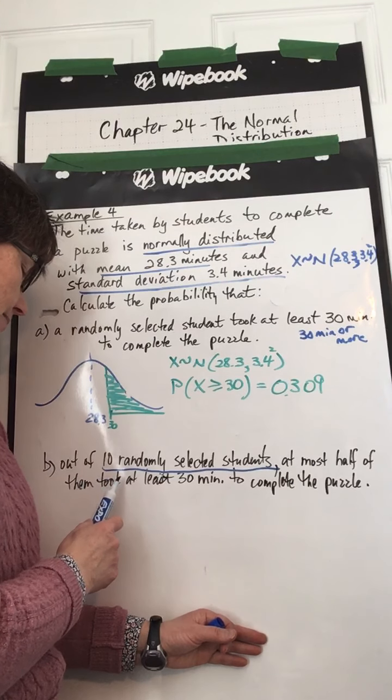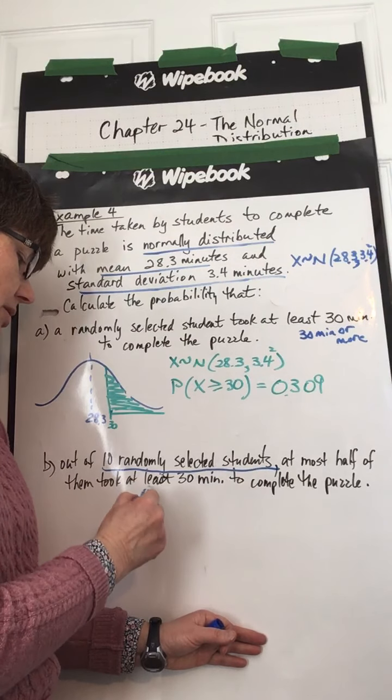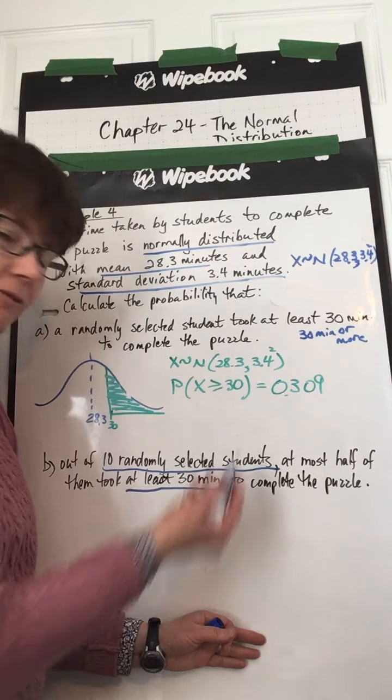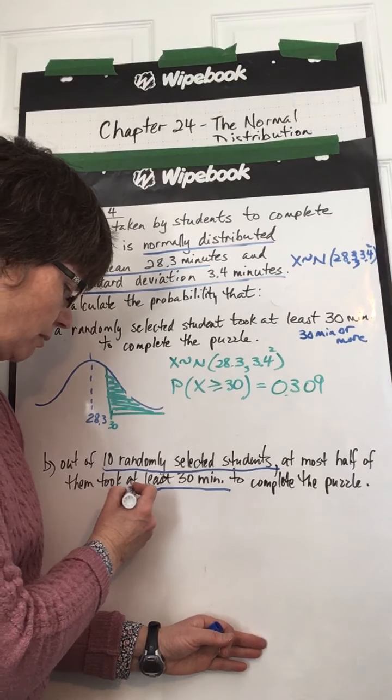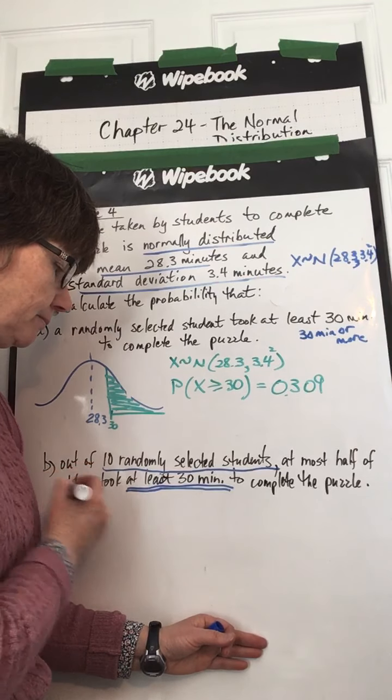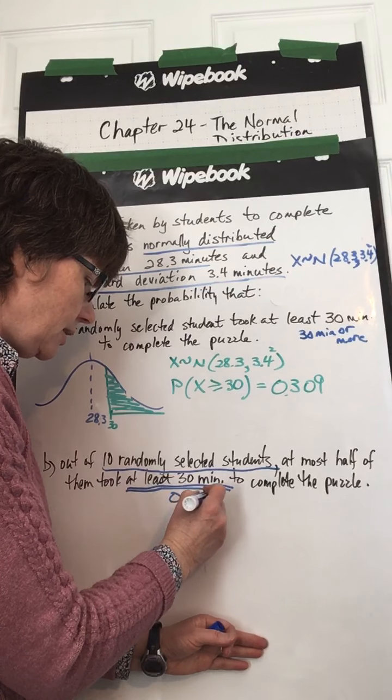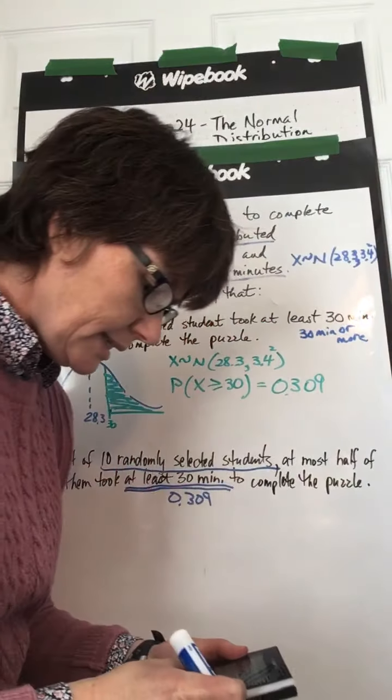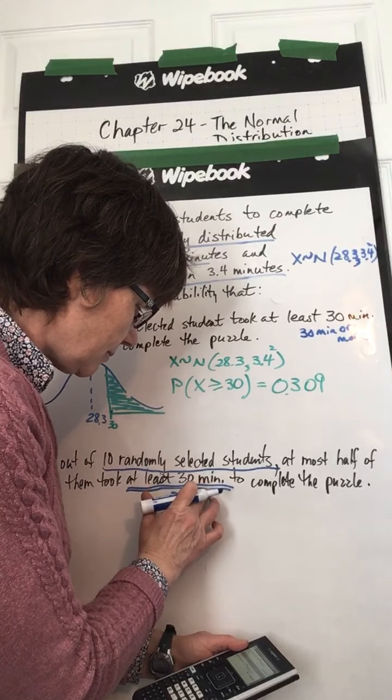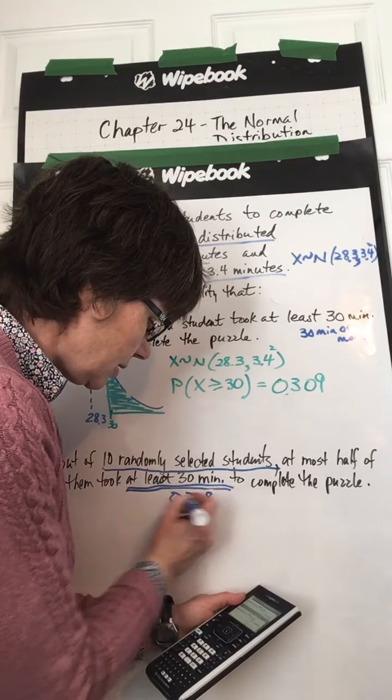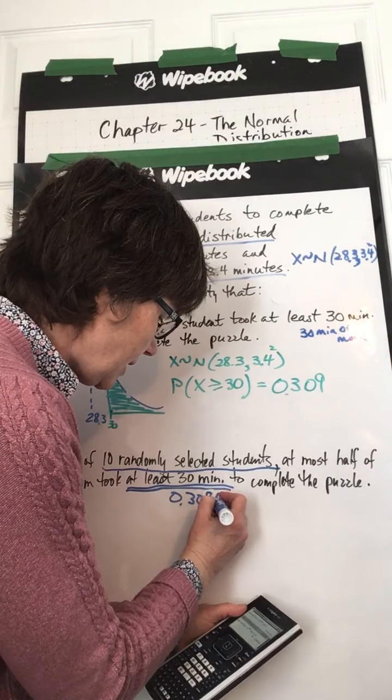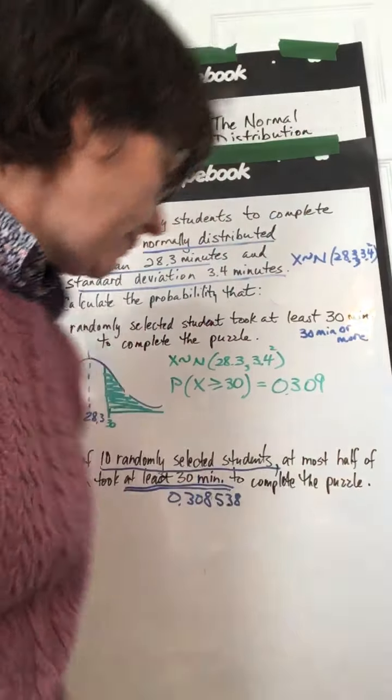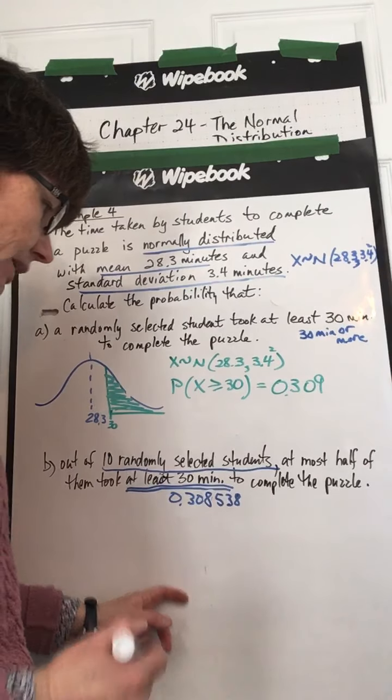Out of 10 randomly selected students, at most half of them took at least 30 minutes. So we're still looking at least 30 minutes to complete the puzzle. Well, we already figured out in part A what the probability is of this happening. OK, and that probability is 0.309. And perhaps we want to use more digits because we're using that number again, so I'm not rounding it. So 0.308538 is what my calculator says. OK, from part A.